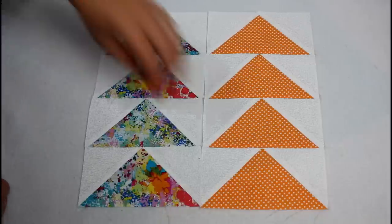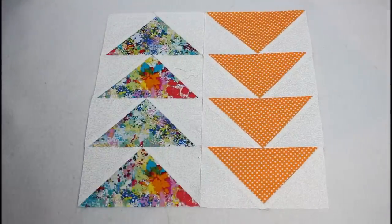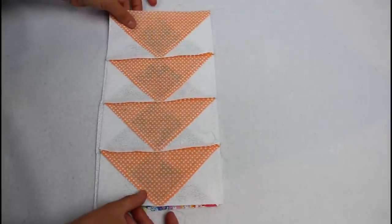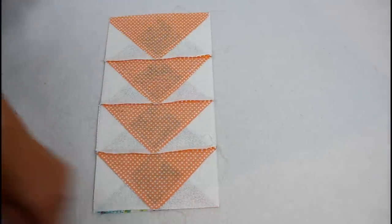All that's left is to sew the two rows together. You can have the arrows all going in one direction or you can have them going in opposite directions like mine. Give the seams another press of the iron and the block is completed.